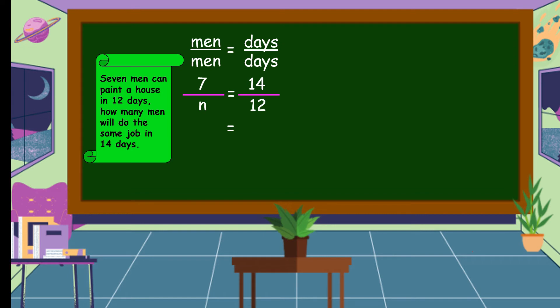Then we're going to cross-multiply. 7 times 12 is equal to 84, and N times 14 is equal to 14N.